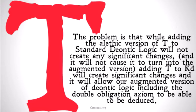The problem is that while adding the alethic version of T, not the deontic version, the alethic version of T that we just stated to standard deontic logic, will not create any significant changes, and most specifically, it will not cause it to turn into the augmented version of deontic logic. Adding T to KD or KS will create significant changes, and it will allow our augmented version of deontic logic, including the double obligation axiom, to be deduced.